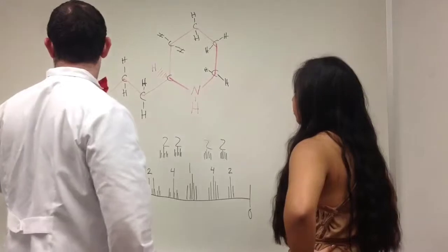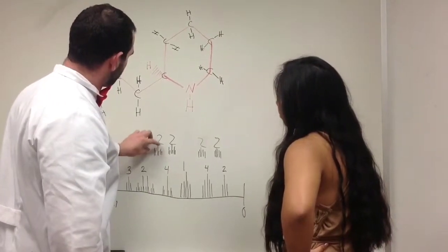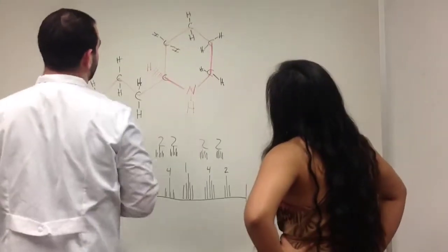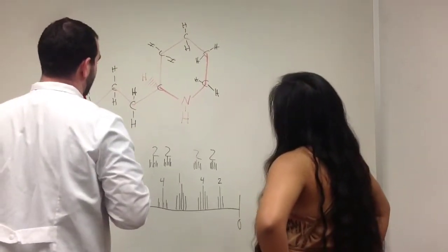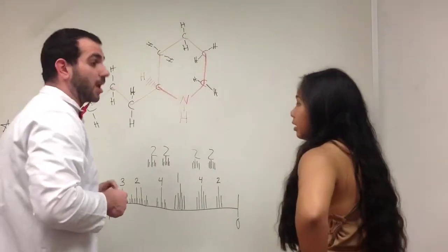Now, with our N plus 1 rule, we'll give us 3. So that's represented here by our triplet. Now, moving on to the carbon here with only one hydrogen directly attached to it, is going to give us a singlet line on each individual line. Those little lines, exactly.